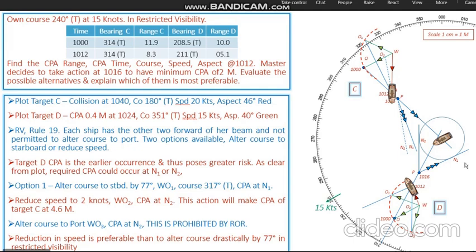There's a doubt about why we are not able to achieve the N1 CPA with reduction in speed. Even if you stop your ship - that means your speed has come to zero - target Delta is still going to pass forward of your vessel. There is no way target Delta can go on a line of approach of Papa November 2.